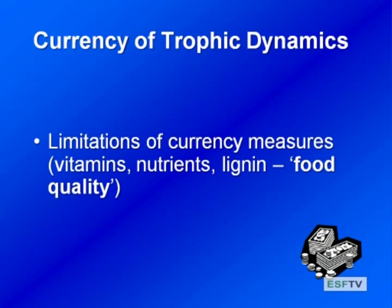There's a limitation to all of those measures, and one that will keep coming up is the potential limit of food quality. Just like eating 1,200 calories a day entirely in candy bars wouldn't be as nutritious as a balanced diet — you get the same energy but it's not as healthy — it's the same with natural food organisms eat. Different prey items, different algae and macrophytes, may differ in their vitamins, nutrients, or essential fatty acids, and these basic measures don't account for food quality. We'll discuss these limitations later in the class.